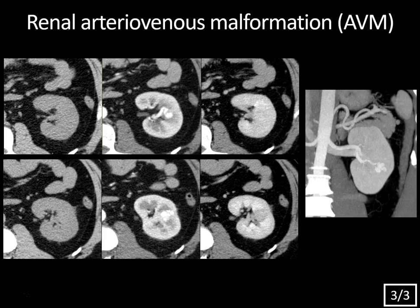Compare that to an AVF — an AV fistula — which is also an abnormal communication but does not have a vascular nidus and tends to be post-traumatic rather than congenital. The corticomedullary phase is a nice addition to a renal mass study because you can't really see AVMs on the non-contrast phase, and on the nephrographic phase it tends to be isodense to the blood pool. These tend to be congenital and can occur in syndromes like Osler-Weber-Rendu syndrome, and they can occasionally cause hematuria.